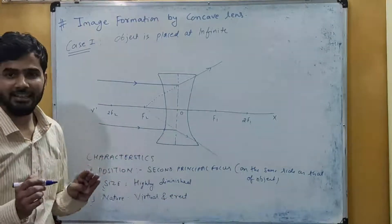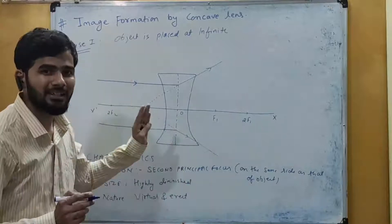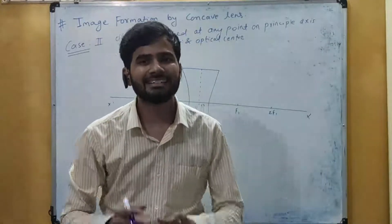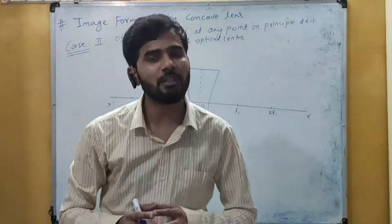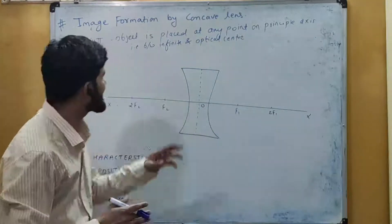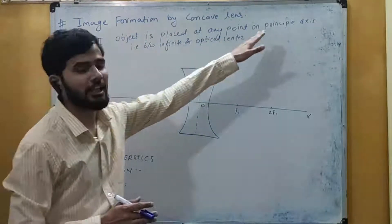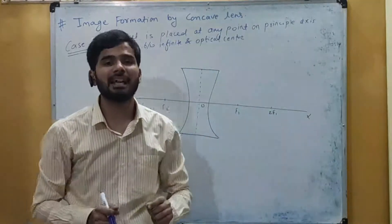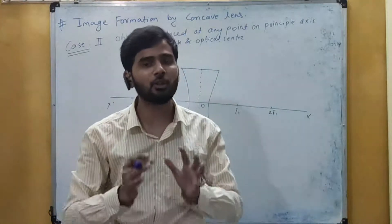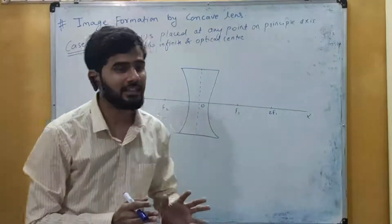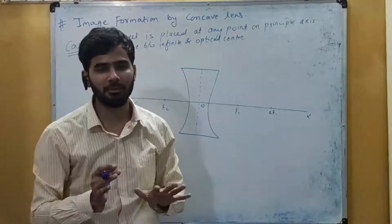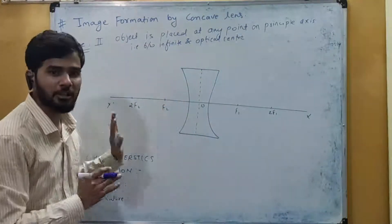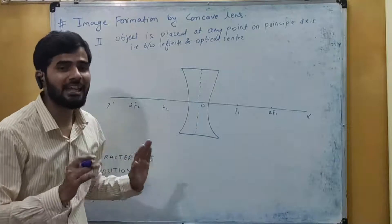This is the image formation when the object is placed at infinite. Now let us take the second case of image formation by concave lenses — when the object is placed at any point on the principal axis, that is, between the infinite and the optical center.